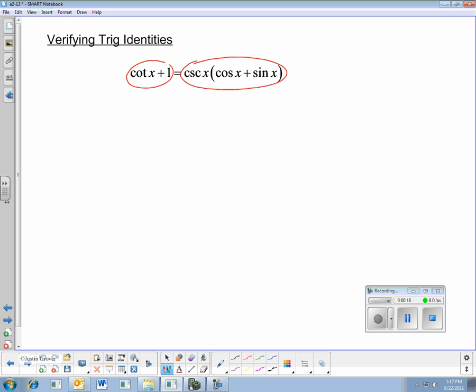So we need to pick a side and change it using our identities and reciprocals and things like that until it looks like the other side. Now the general rule here is that you want to make the more complicated side look like the less complicated side. So looking here, cotangent x plus 1 or cosecant times cosine plus sine, I think the right side is more complex.